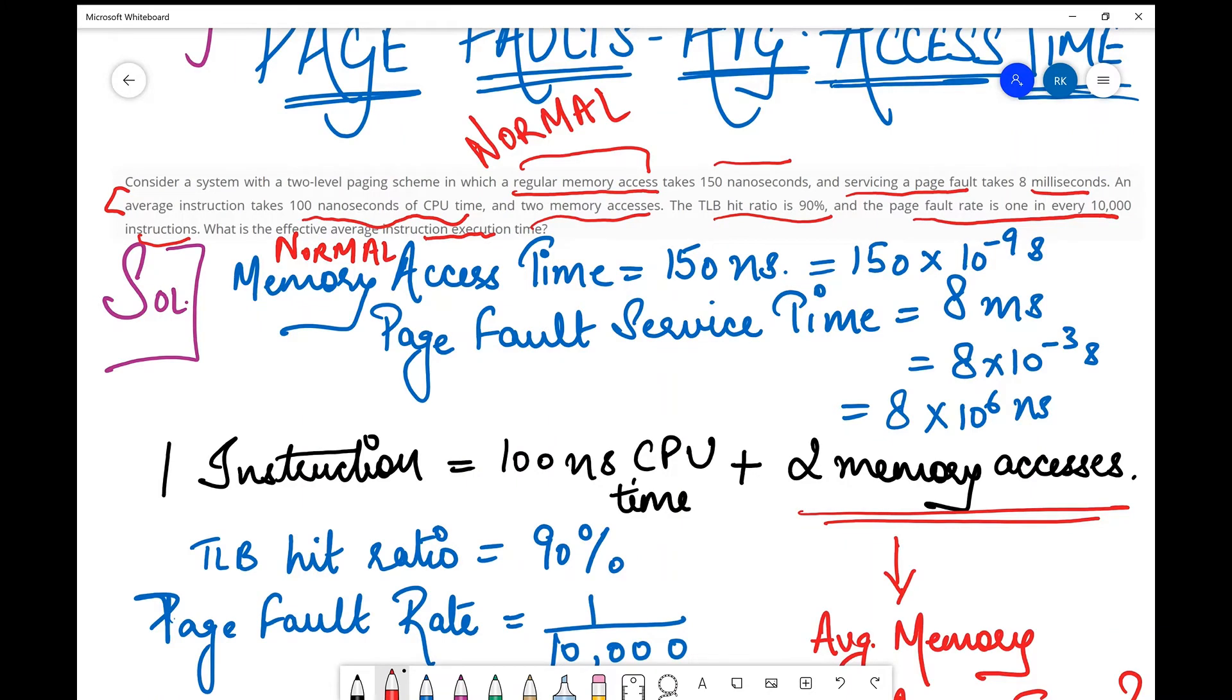Lots of information is there, so it's better to jot down the given things for clarity. I write: normal memory access time is 150 nanoseconds and page fault service time is 8 milliseconds. I always emphasize that whenever you are given two quantities with different units, don't delay conversion. Convert them there and then to a common unit.